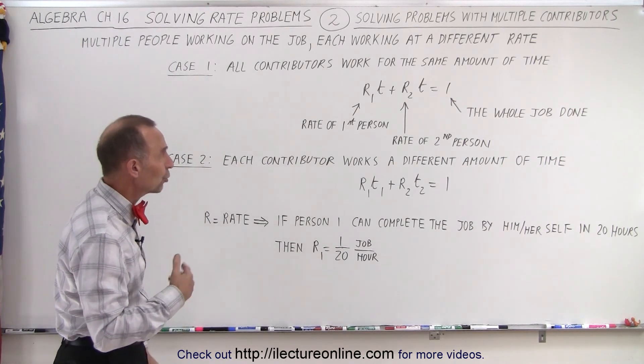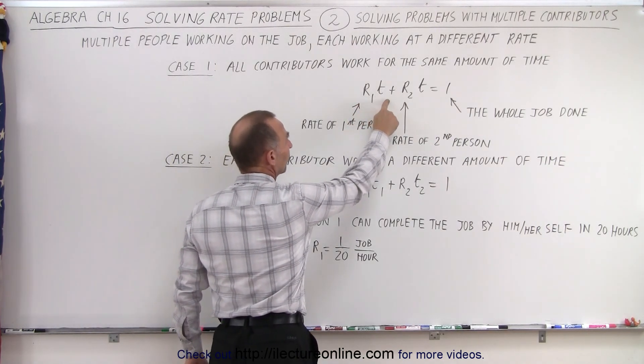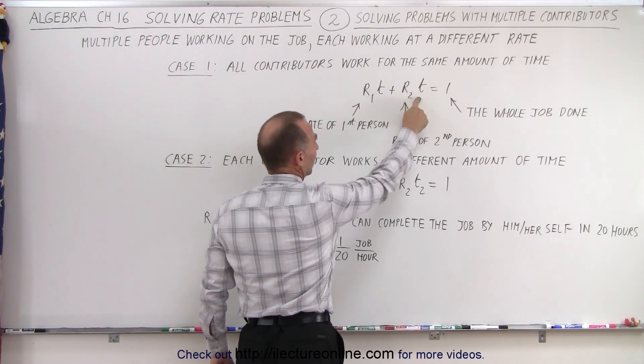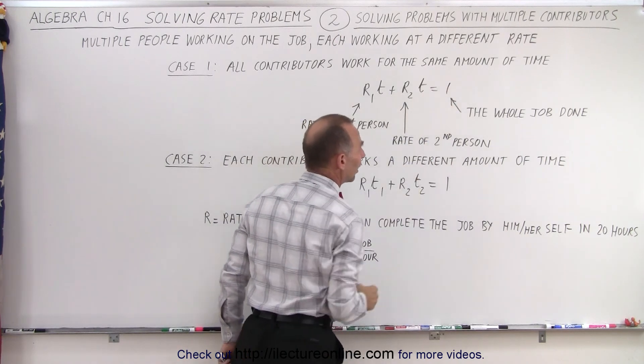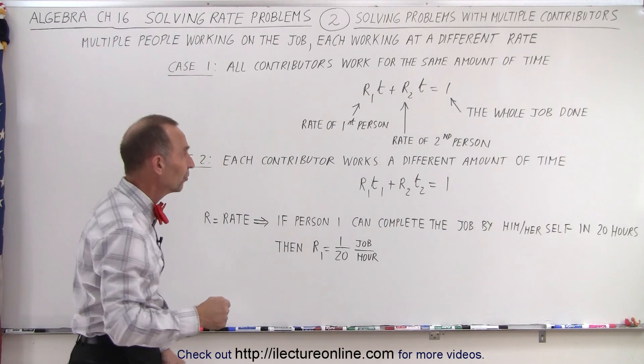If it's for the same amount of time, the equation is the rate of the first person times the time worked, plus the rate of the second person times the time worked, equal the whole job done. And then we simply have to determine what the rate of each person is.